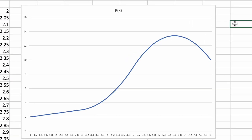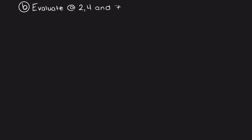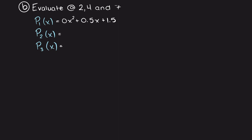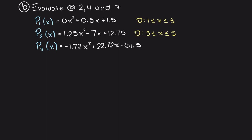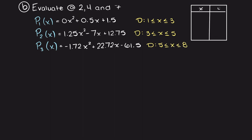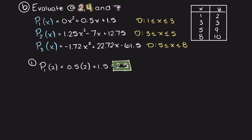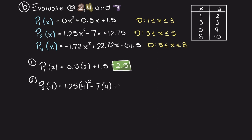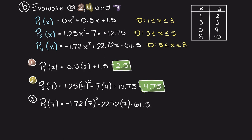As you can see in the following graph, our first interpolating polynomial is a linear spline as we previously mentioned. Back on our blackboard, we can begin solving the second question. We were asked to evaluate the interpolating polynomials at inputs of 2, 4, and 7. For an input of 2 we use our first interpolating polynomial, resulting in an output of 2.5. For an input of 4, that falls in the domain of P2, resulting in an output of 4.75. Lastly, for an input of 7 we use our third polynomial, resulting in an output of 13.15. We have now answered all the questions we were asked.